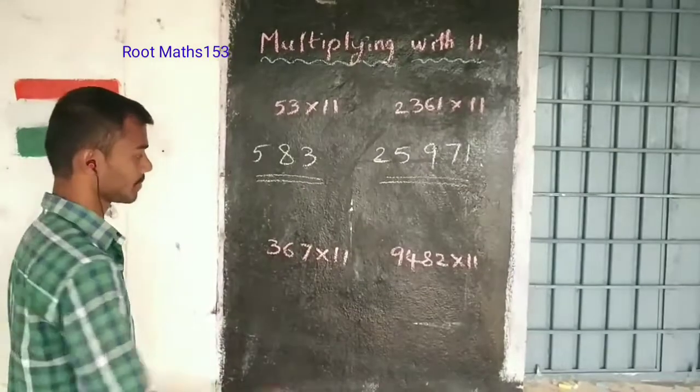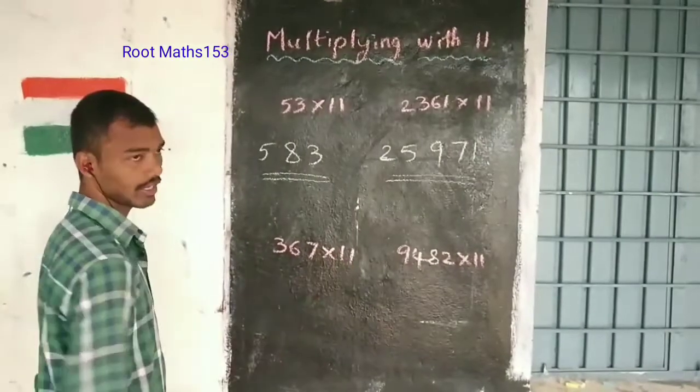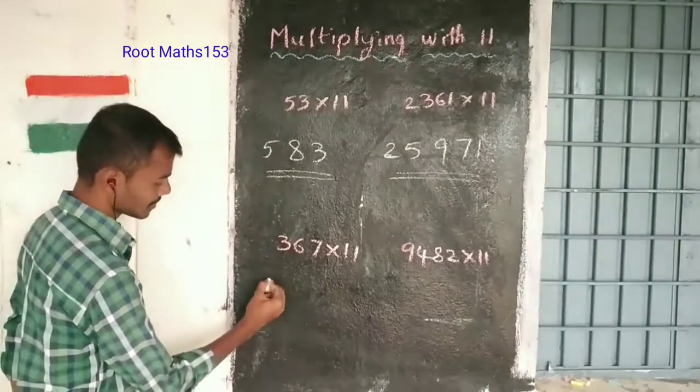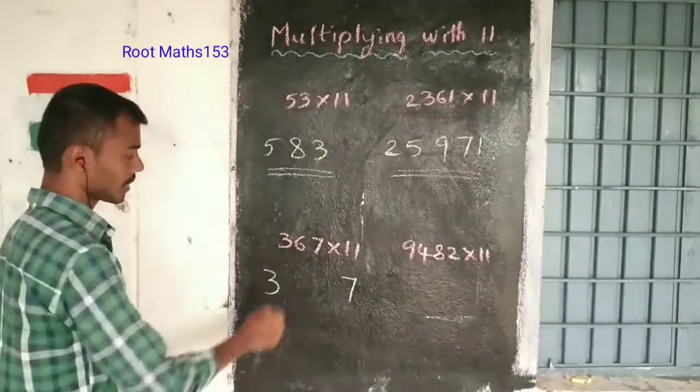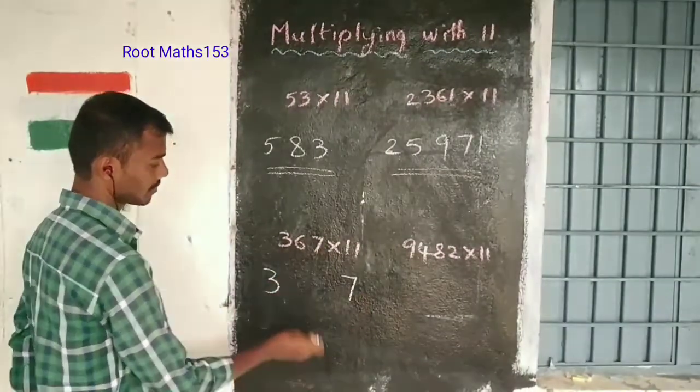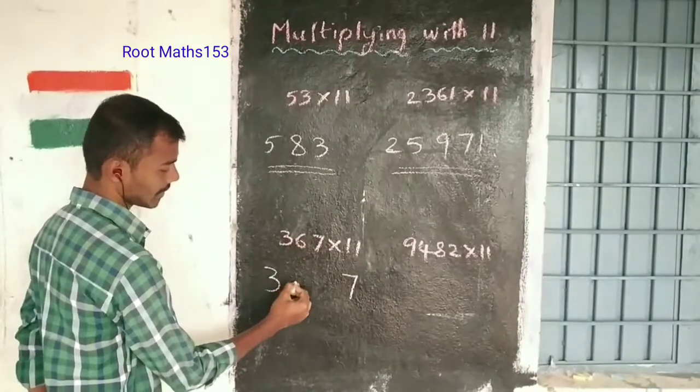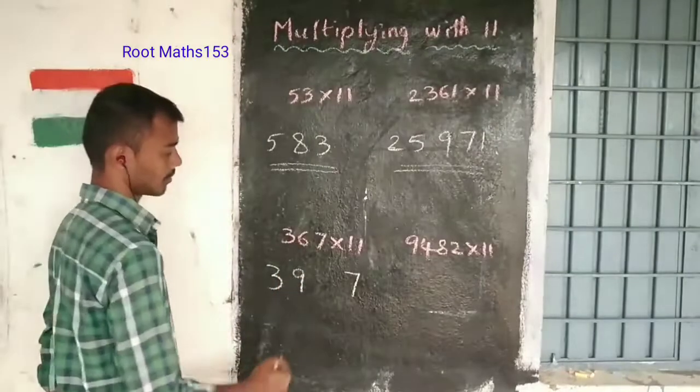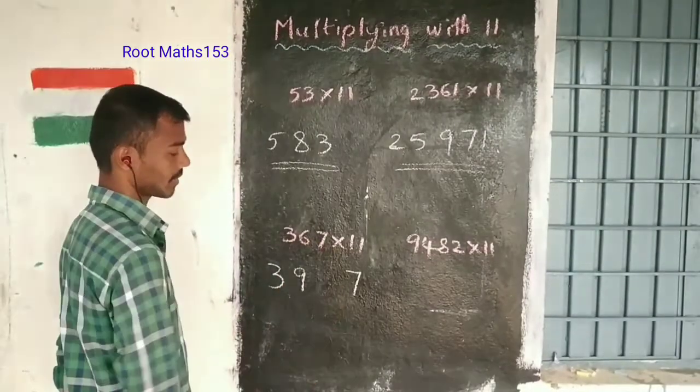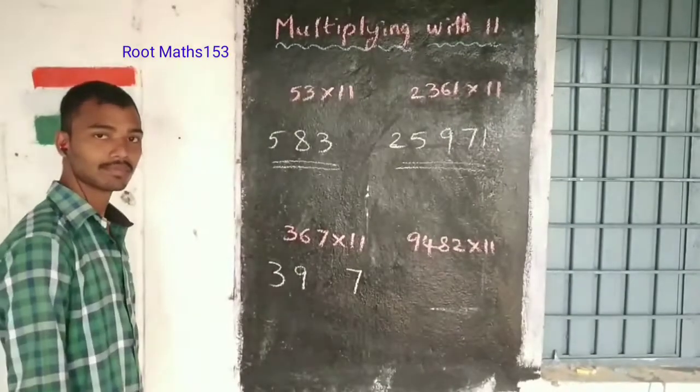Now let's move on. 367 times 11. First digit 3, last digit 7. Next, add adjacent digits: 3 plus 6 is 9, and 6 plus 7 is 13.